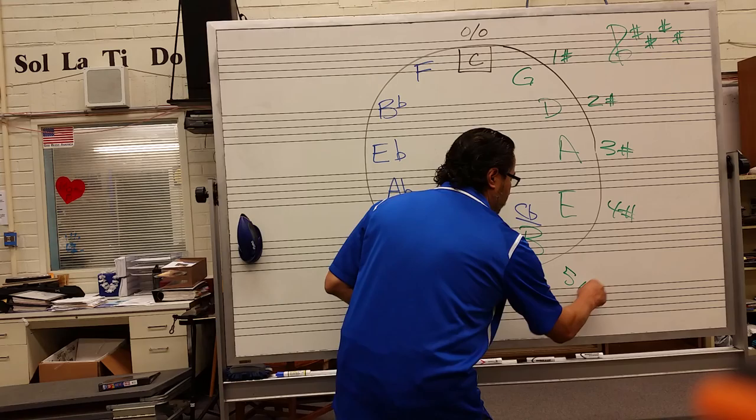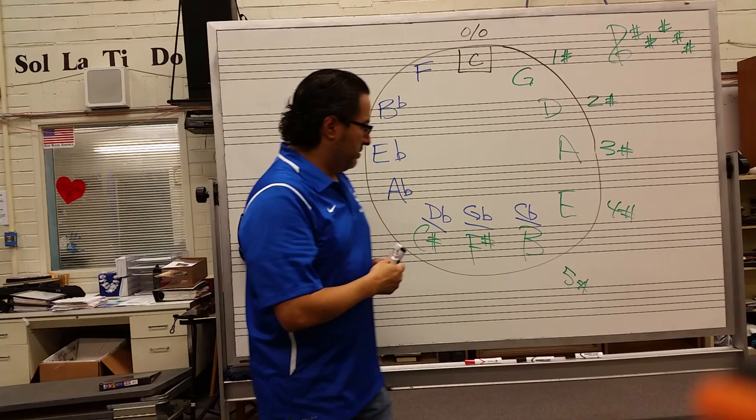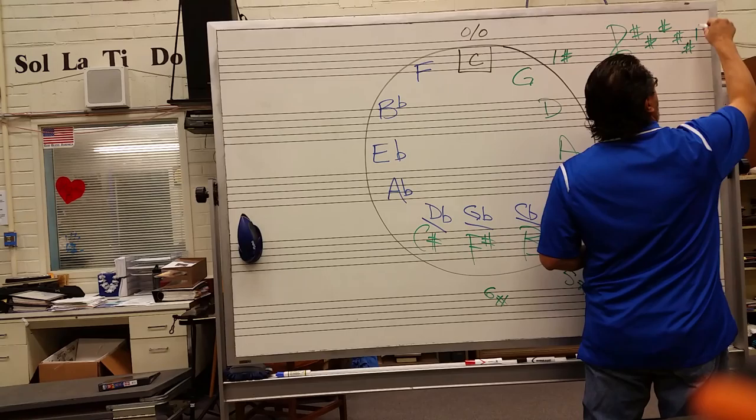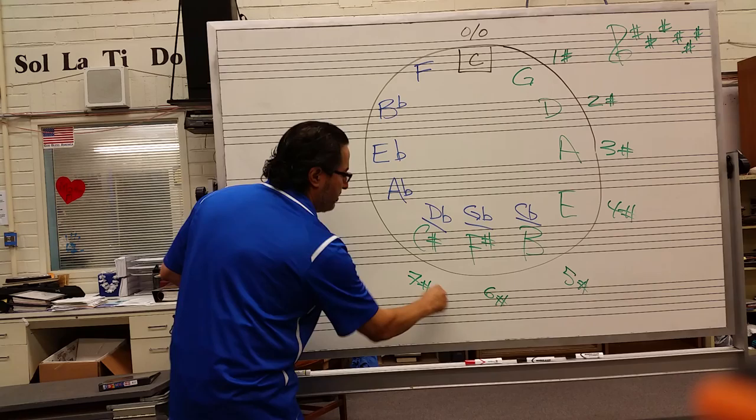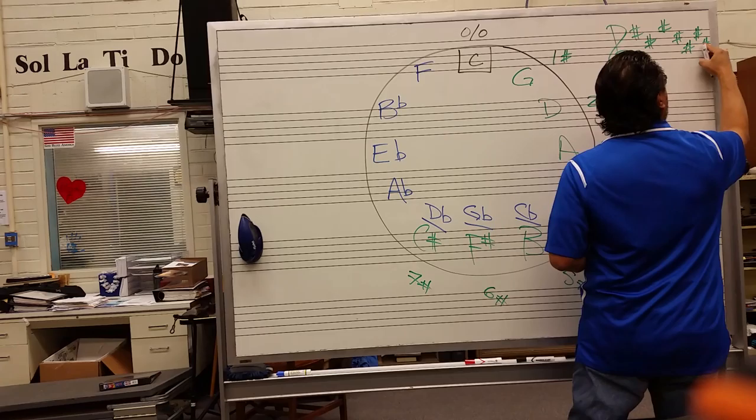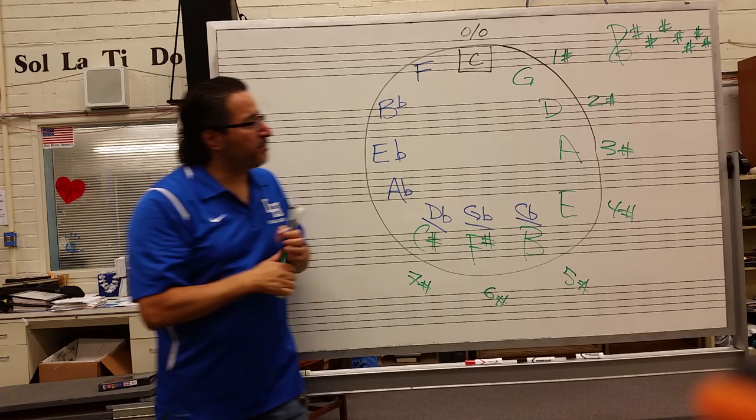Key of B is five sharps — we add an A sharp. Key of F sharp is six sharps — we add a B sharp. And the key of C sharp is seven sharps. So that's it — you have seven sharps on the sharp side.